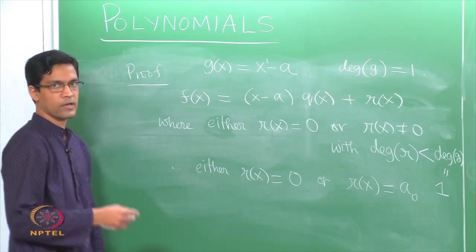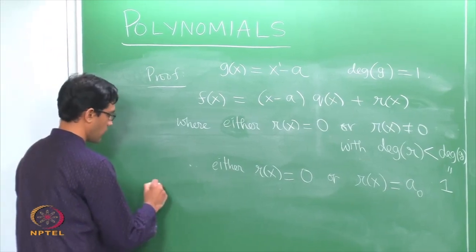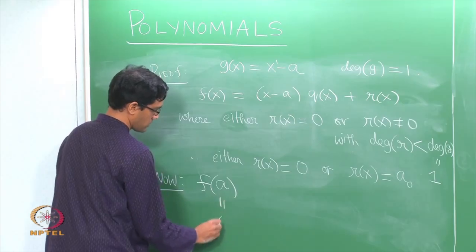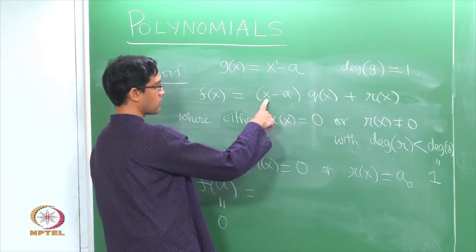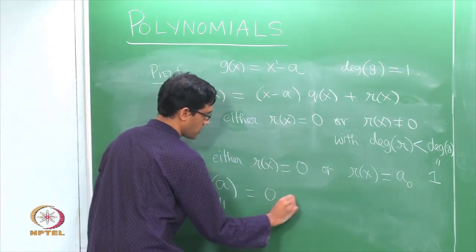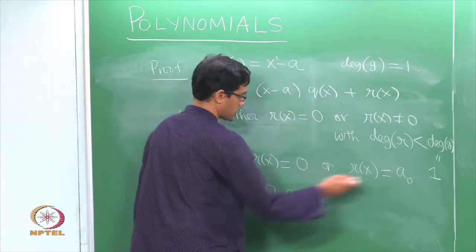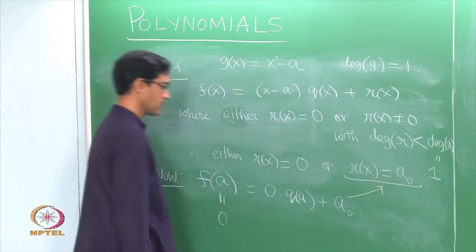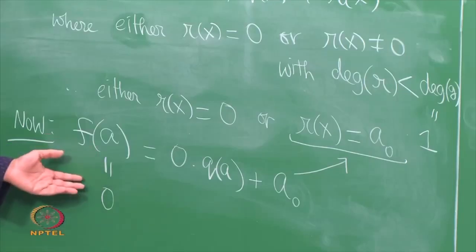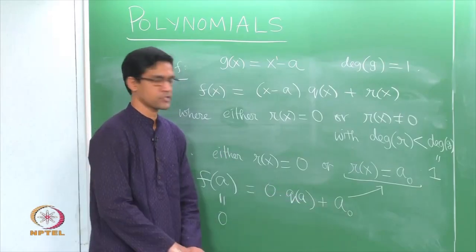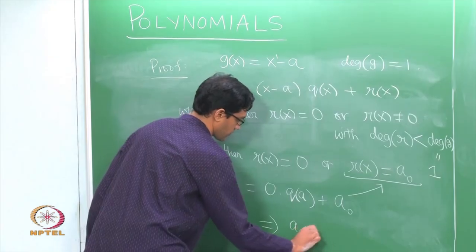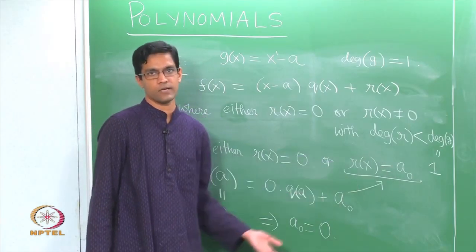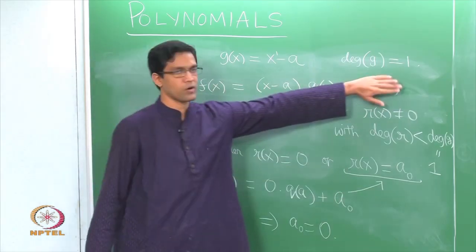Why? Because we know that if you plug in x equal to a, f becomes 0. Now observe that if I plug in x equal to a, the left hand side is f(a), which is 0. The right hand side becomes 0 times q(a) plus r(a). Since r is just a constant A₀, the left hand side is 0 and the right hand side is 0 plus A₀, so A₀ must be 0. We conclude the remainder is 0, so f(x) is just (x − a) times q(x) with no remainder term.